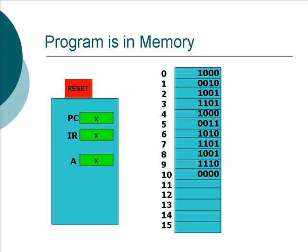Here is the program that we wrote in the last video. It's loaded into memory here. Notice that it only occupies the first 11 nibbles of memory. The contents of the program counter, the instruction register, and register A are indeterminate — we don't know what they are and it doesn't matter what they are at the moment.